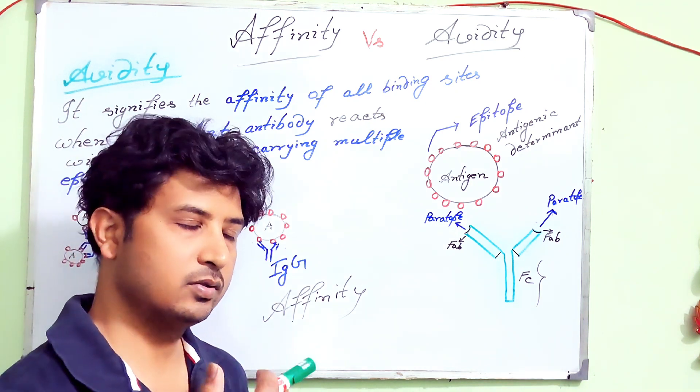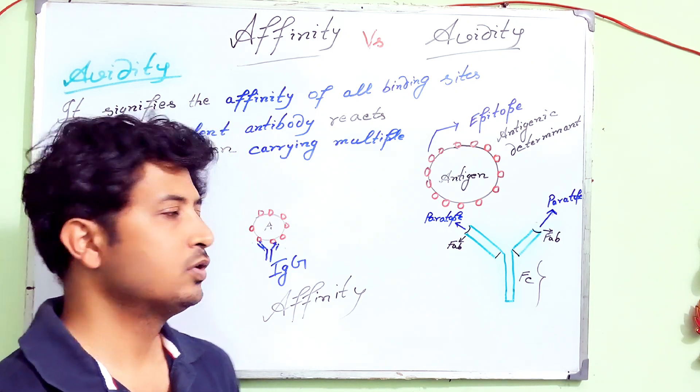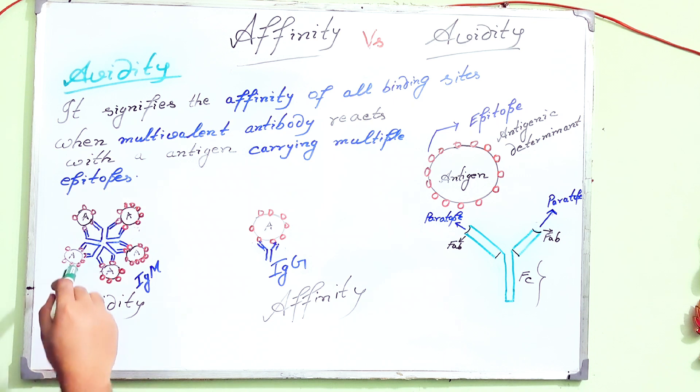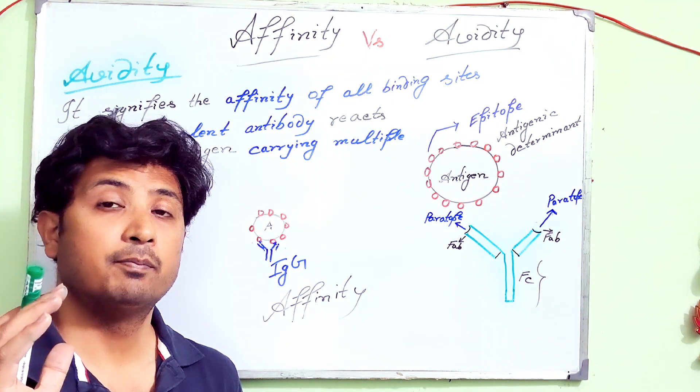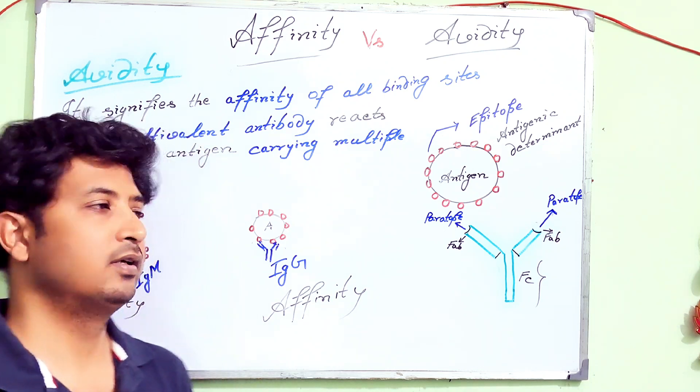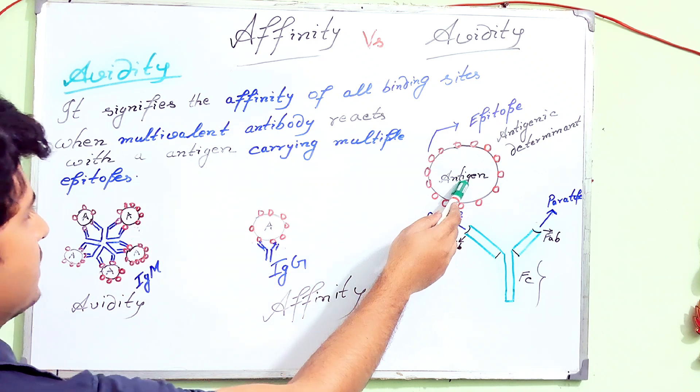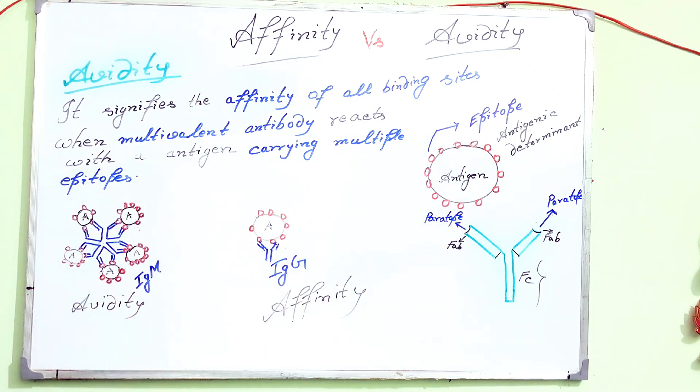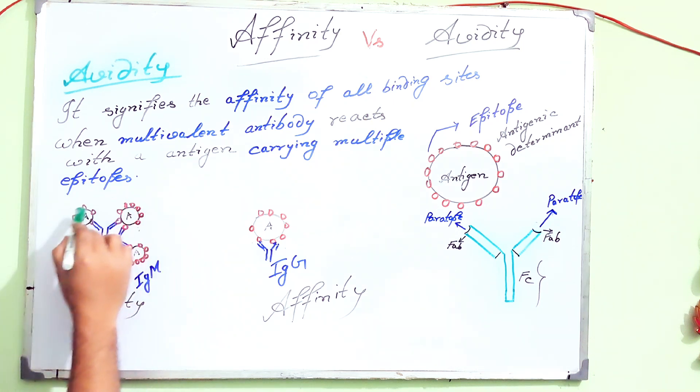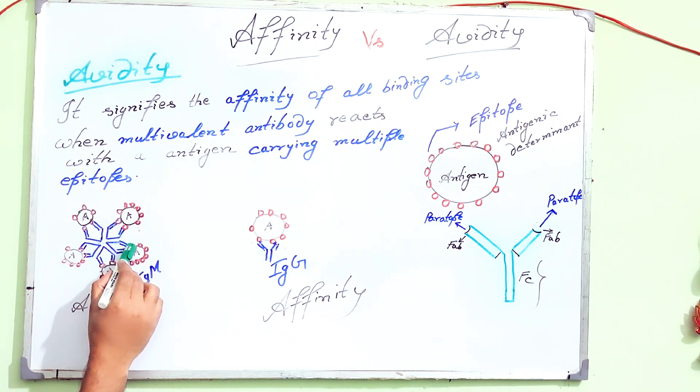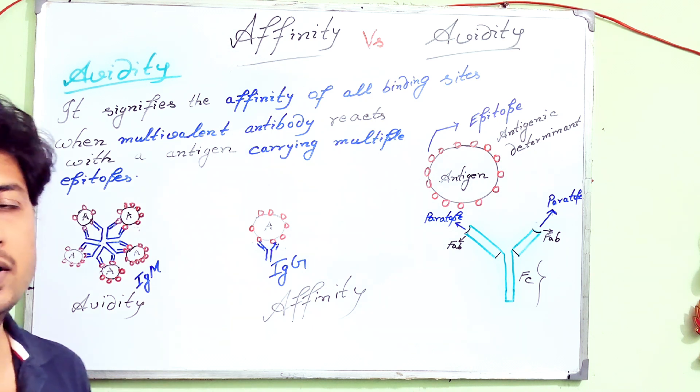Either a single epitope or two epitopes. But in case of IgM, they have a pentamer structure, so they have 10 valences. That means each antibody structure will be able to bind multiple epitopes in a particular antigen. I have drawn this antigen here in a smaller way so that you can understand that all the valences are occupied—all the fragment antigen binding sites for antibodies are now occupied with the epitopes. That is why the total strength of all the affinities, each epitope-parotope interaction, is much higher.